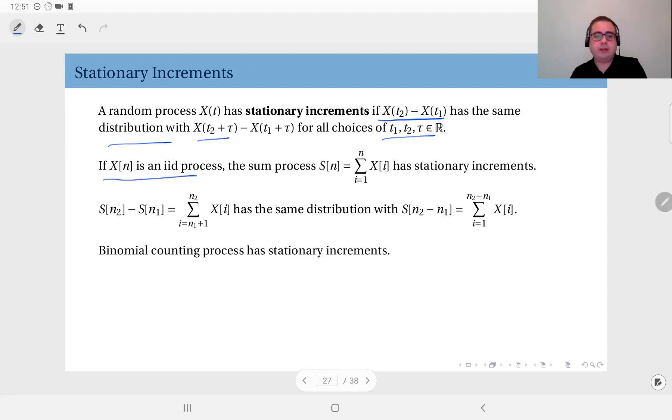If X(n) is an iid process and the sum process associated with it will have stationary increments. It's really easy to show this. I'm going to leave it to you.